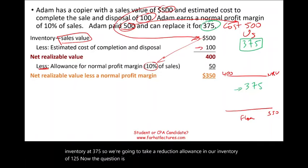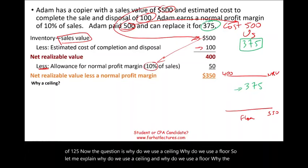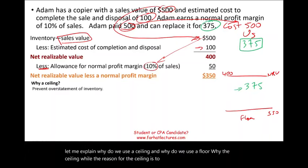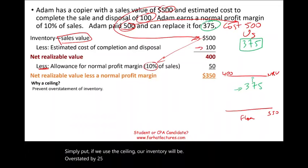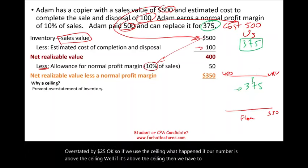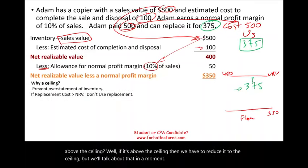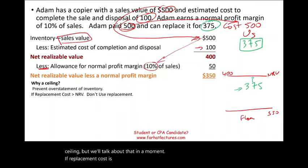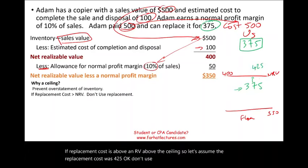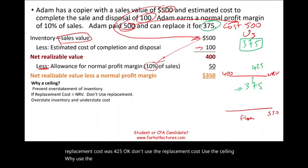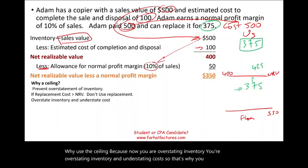Why do we use a ceiling? The reason for the ceiling is to prevent overstatement of inventory. If the replacement cost is above NRV — say $425 — using it would overstate inventory and understate cost. So if replacement cost exceeds NRV, we use NRV as the market instead. NRV is the appropriate figure to cap at.